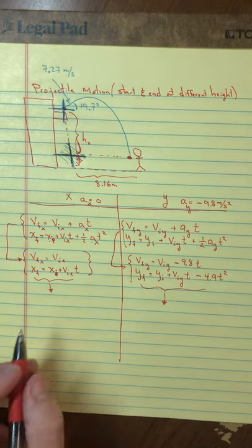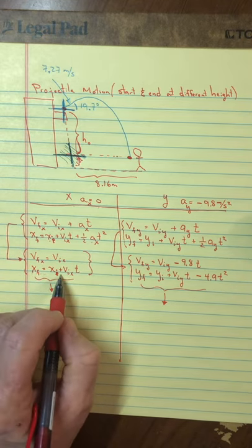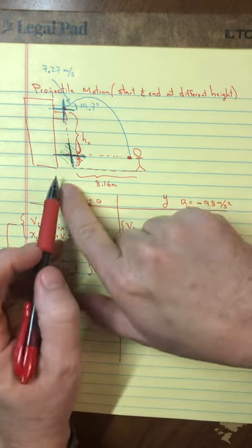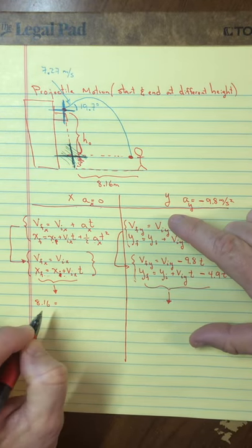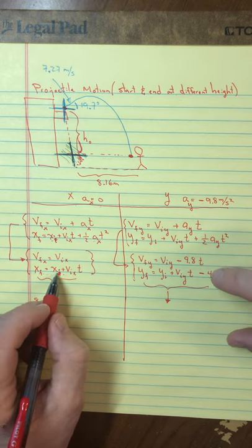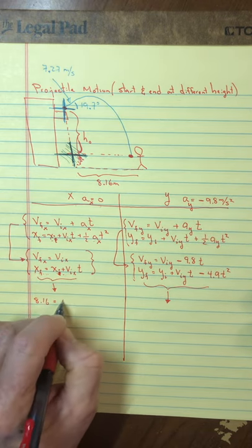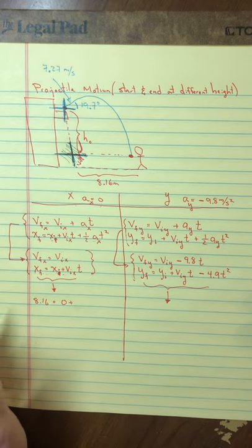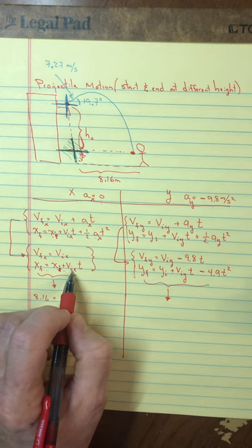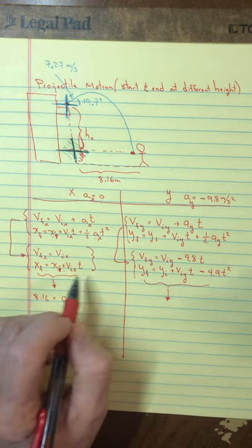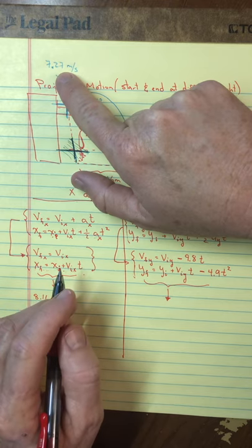Starting with the x direction: what's the final position of the keys? They go horizontal 8.16 meters. What's the initial position? Zero. What is the initial velocity in the x direction? It is not the 7.27 — let me draw a vector showing the keys being launched at 7.27.